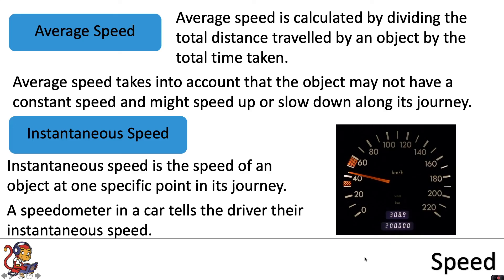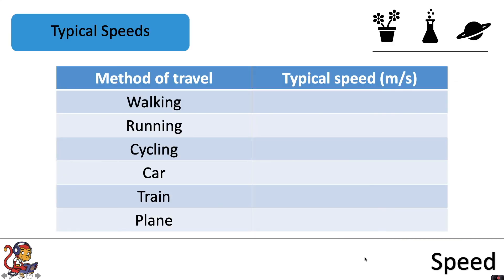A speedometer in a car tells the driver their instantaneous speed. So when drivers are traveling along in their cars, they can see their instantaneous speed at that specific point in their journey.